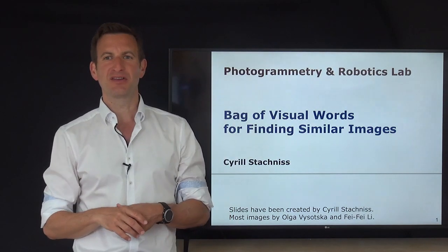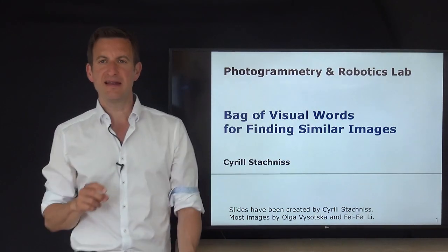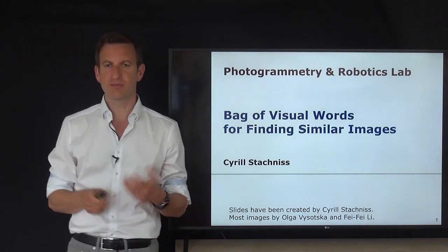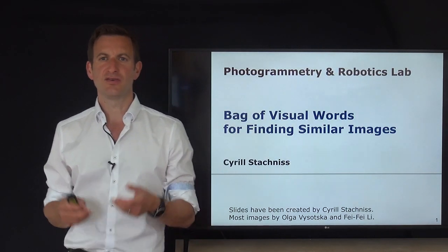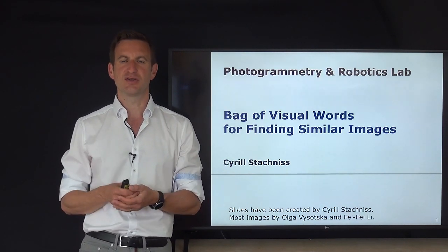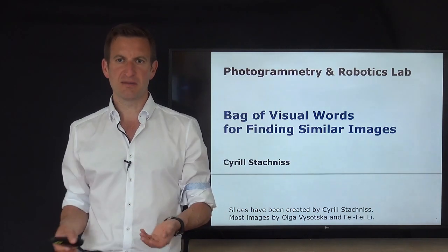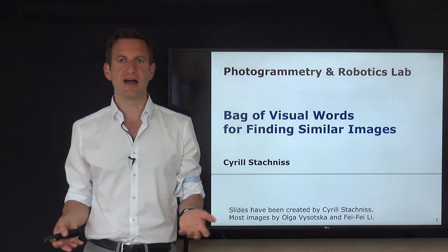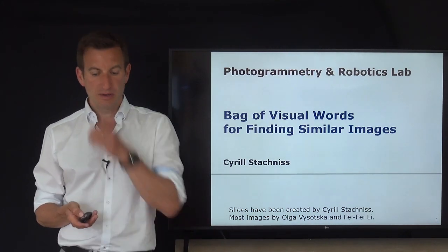Welcome. I want to talk today about a technique called bag of visual words, which is an approach for finding similar images, for example, in a database of images. That's a frequently used problem in computer vision, photogrammetry, or robotics when you want to make data associations. You want to find two images of the same place in order to do place recognition, or you want to find similar images in a database given a query image. Bag of words is a popular technique that can be used for that.